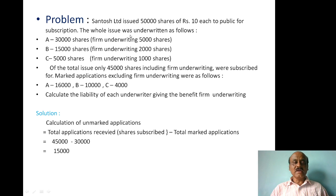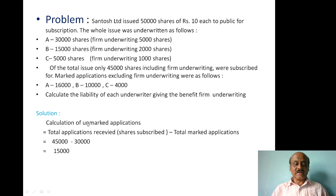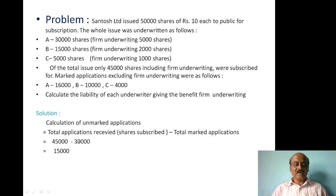For the unmarked applications calculation, this is the formula: applications received minus market applications. Applications received = 45,000; market applications = 30,000 (14,000 + 14,000 = 30,000). Wait — total market applications are 30,000. So unmarked applications = 45,000 − 30,000 = 15,000.